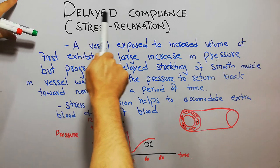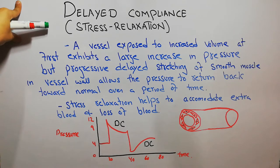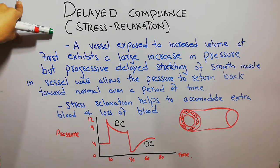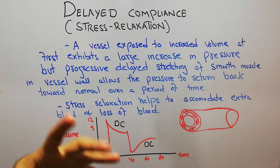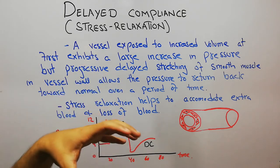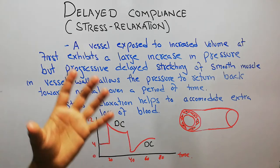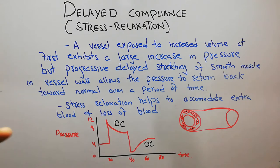Today in this lecture we are going to discuss delayed compliance or stress relaxation of the vessels. In the last lecture we discussed compliance — that compliance was basically the quantity of blood that could be stored in a blood vessel for every millimeter of mercury rise in pressure. Compliance was dependent on the volume of blood and the distensibility of the blood vessel.